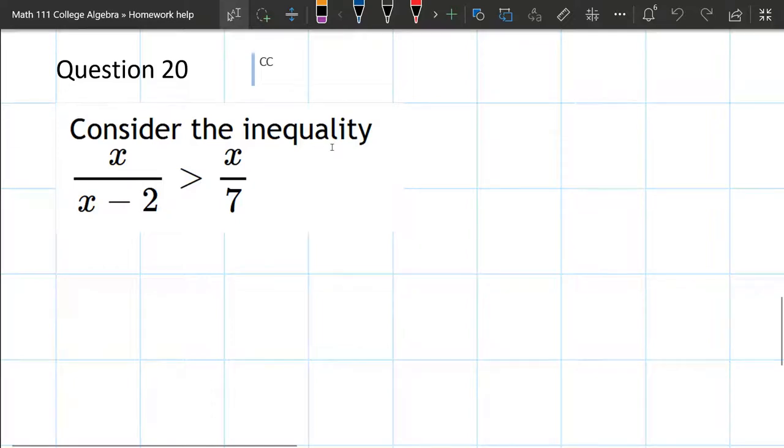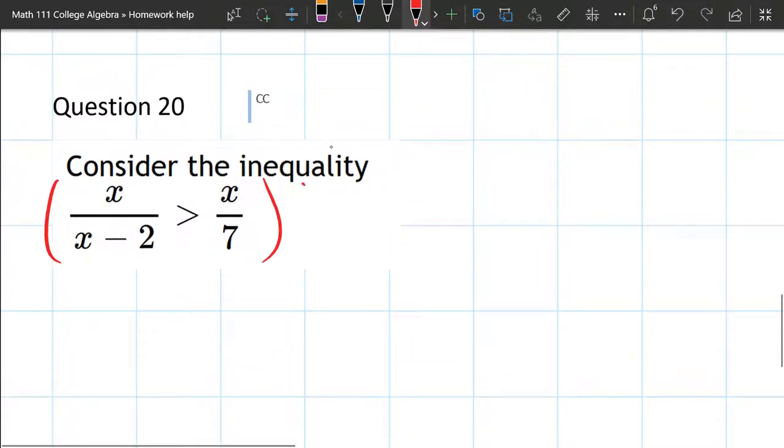This question is a rational inequality. Now I want to warn you, you might be tempted to multiply by all the denominators. And let me tell you why that would be a disaster. You can multiply by 7. That's totally fine.